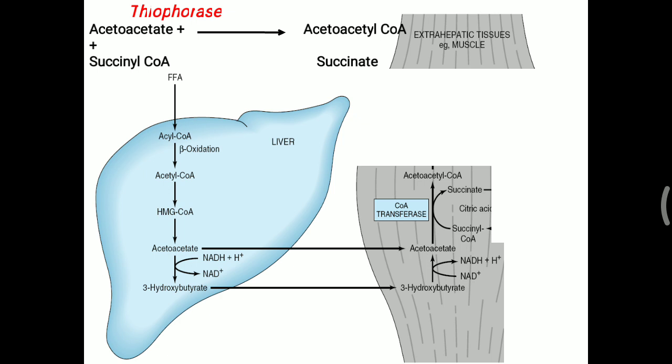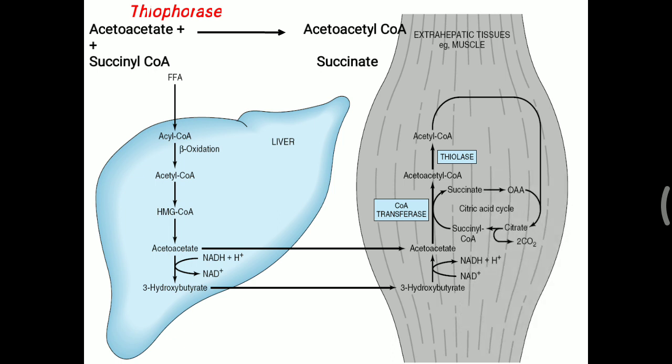Acetoacetyl-CoA is converted into acetyl-CoA, which is metabolized via the TCA cycle. The required oxaloacetate comes from the succinate generated previously in the thiophorase reaction.